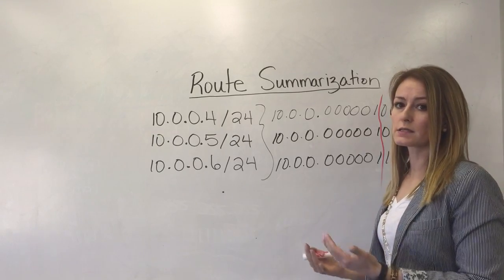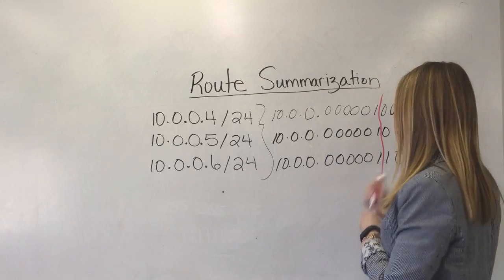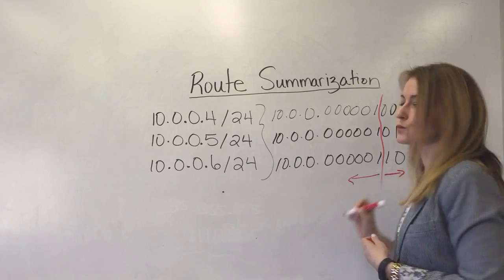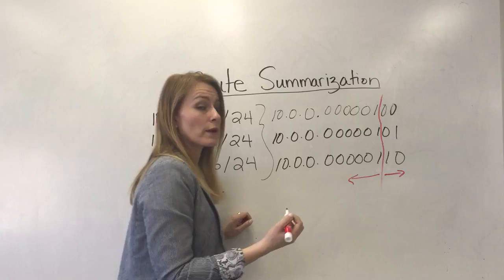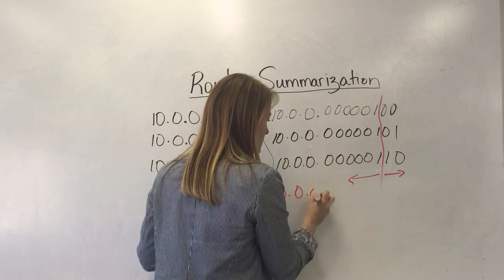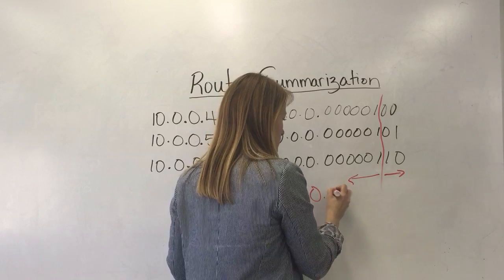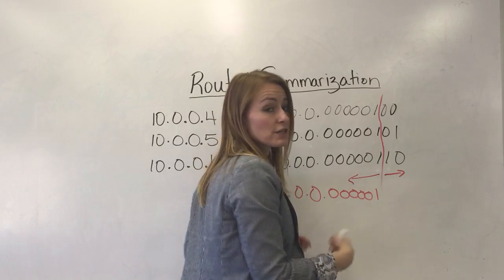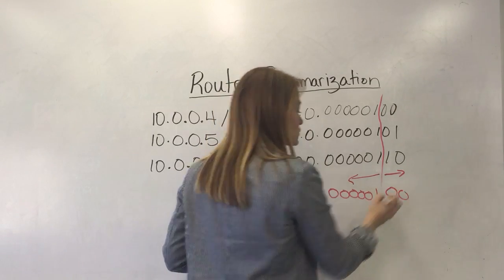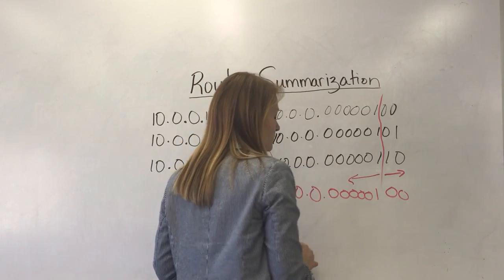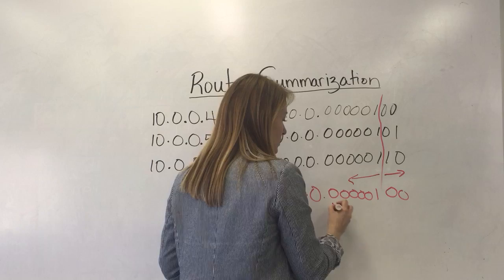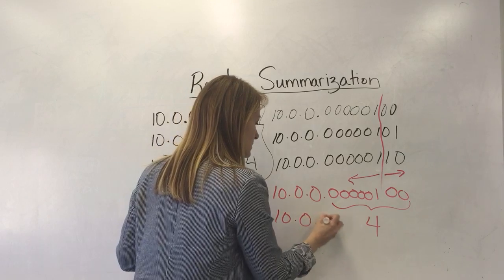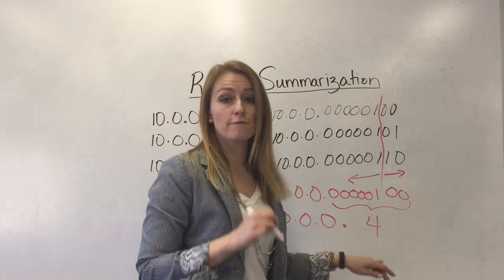So we just need to rewrite our IP address taking everything from the line to the left and keeping it exactly the same. And everything from this line to the right they're gonna become zeros. So we end up with 10.0.0 and I'm gonna keep this in binary for now. So that's this right it stays the same and then everything to the right of the line just becomes zeros. So when we convert that into decimal this becomes four. So our IP address of our summary route is 10.0.0.4.